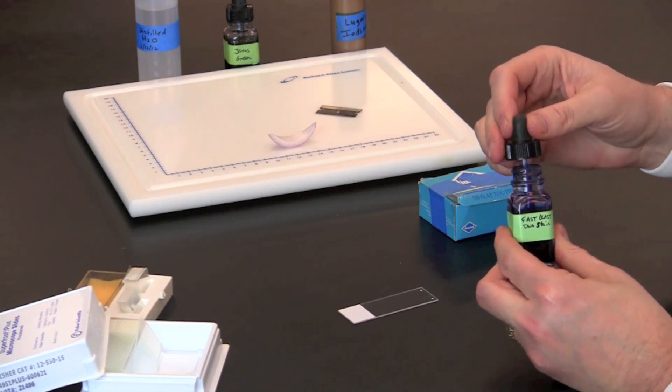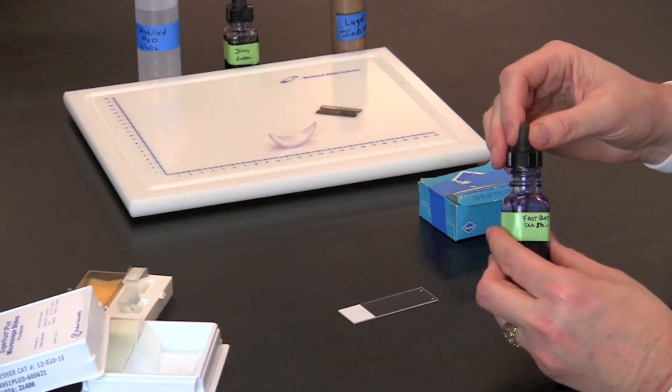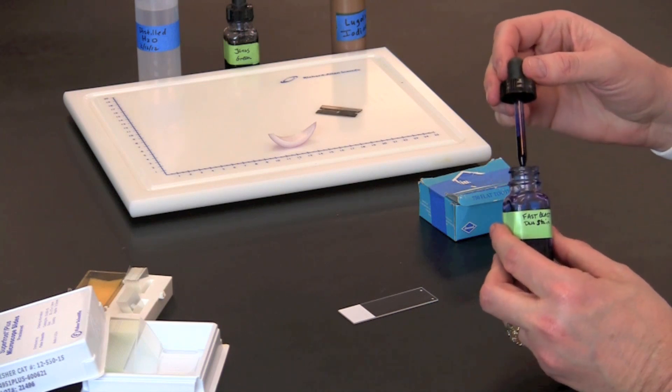To make a wet mount of cheek cells, place a drop of fast-blast DNA stain on a microscope slide.